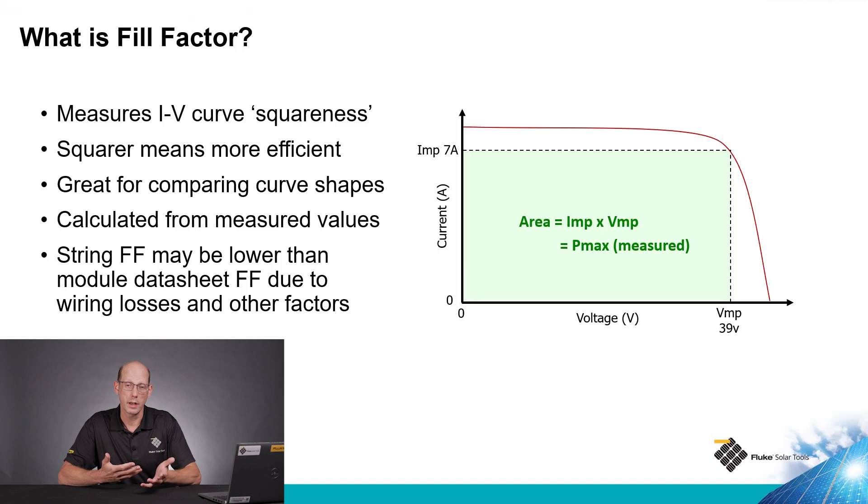So here we see an IV curve. This is a standard IV curve for a properly operating module or string of modules. We can see underneath the curve the power of the module. The maximum power current times maximum power voltage is going to give me the watts or the power of that specific module. We're going to use that in calculating fill factor.